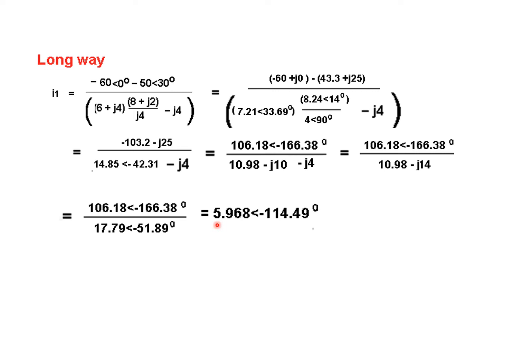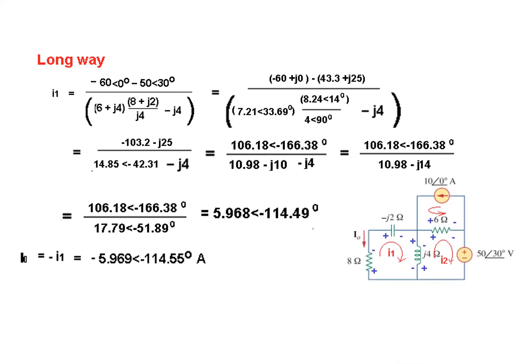So the answer is 5.968 at angle minus 114.49°. As discussed, i-naught is i1 with a negative sign — so i-naught equals minus i1. We put a minus sign in front of this value.